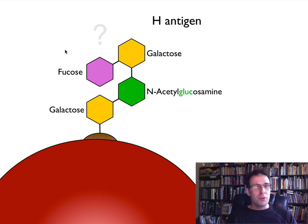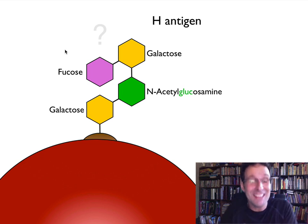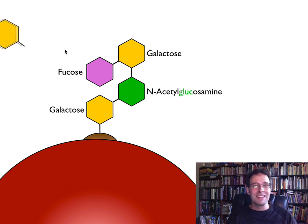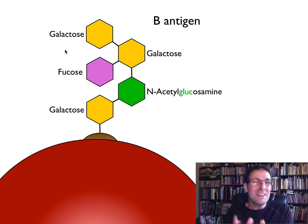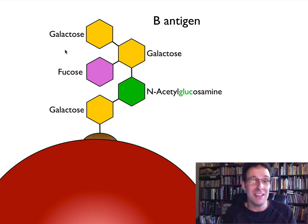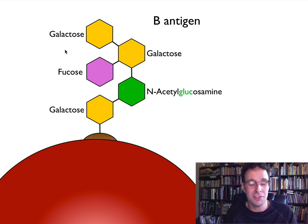But some people then have that antigen modified. The H-antigen is put on their red blood cells and then it gets modified by the addition of another galactose to the end of it. And that's what we refer to as the B-antigen. So really, the B-antigen is the H-antigen — it's just had a galactose added on to the end of it. We would say that the H-antigen is a precursor to the B-antigen.